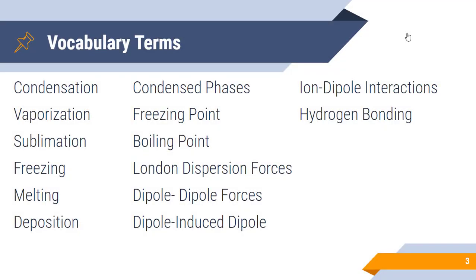We've got a lot of different vocab terms. A lot of these you've already discussed in class: all the different phase changes, condensed phases, freezing point, boiling point, London dispersion forces, dipole-dipole forces, dipole induced dipole, ion dipole, and hydrogen bonding.